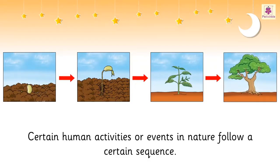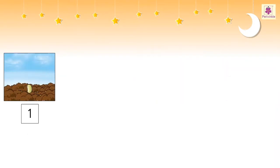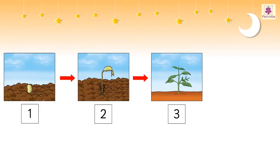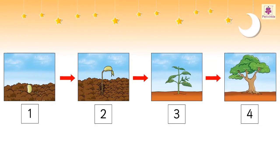Let us look at one such example. For a tree to grow, first, the seed is sown in the soil. Then, after a few days, the seed sprouts. Soon, we can see the sprout turning into a young plant. Lastly, the plant grows into a tree.